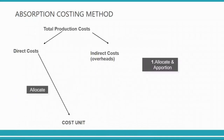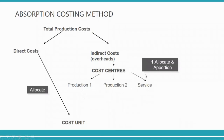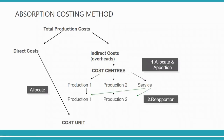You have your five thousand dollar overhead. You split it — perhaps two thousand here, two thousand here, one thousand to a service department. Service departments do not produce anything; they just provide services to production departments. So you cannot leave any cost in the service department — you must transfer it back to production through reapportionment. Then you calculate OAR for production department one and OAR for production department two, and charge it to the product — that is called absorption.